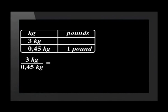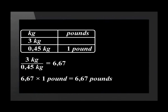We divide the values in the same column. In this case, it means that 3 is divided by 0,45. The answer is 6,67 when we round to two decimal places. The answer to the division is then multiplied by the rest of the conversion factor. In this case, the rest of the conversion factor is 1, so we multiply by 1. This means that 3 kilograms is equal to 6,67 pounds.